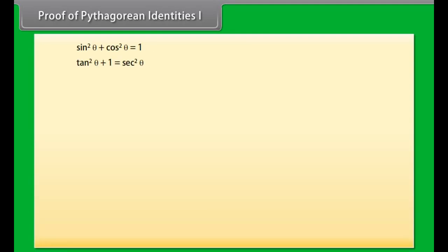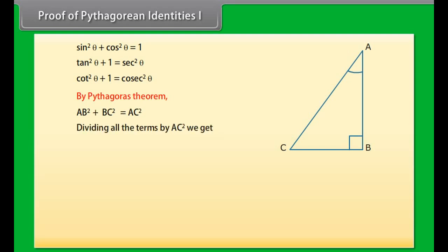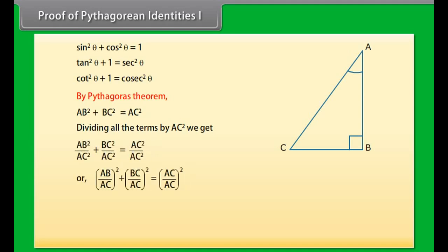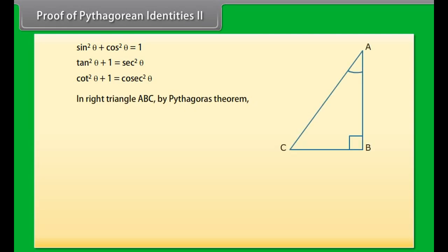Proof of Pythagorean identity 1. Now we will prove one Pythagorean identity and use it to prove other identities. For that we take a right angle triangle ABC. By Pythagoras theorem, AB square plus BC square is equal to AC square. Now dividing each term by AC square we get: AB upon AC whole square plus BC upon AC whole square equals AC upon AC whole square. That is, cos square A plus sine square A is equal to 1. This is true for all A such that 0 degree is less than or equal to A, which is less than or equal to 90 degree. So this is a trigonometric identity.